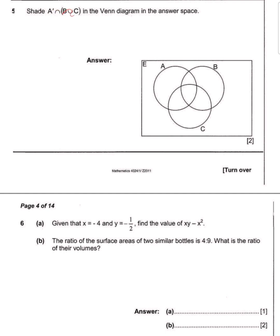The first one says shade A complement intersection (B union C) in the Venn diagram in the space provided. How are you going to do that? So come closer. When you see